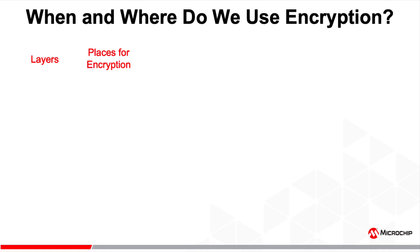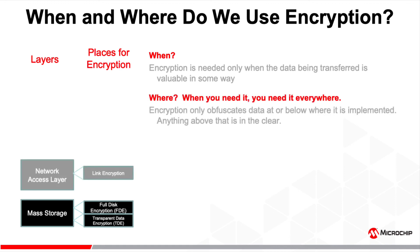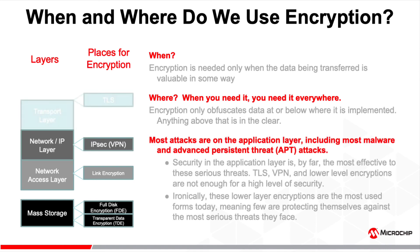When and where do we use encryption? When encryption is called for, it should be used everywhere. Remember that anywhere you use encryption in the stack, it only protects that level and below. A common mistake people make is relying on TLS for application security. TLS protects data in motion — it does nothing to protect the application layer. If someone hacks your application, they will have access to your data in the clear.